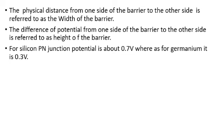The difference of potential from one side of the barrier to the other side is referred to as the Height of the Barrier. For Silicon, the PN junction potential is about 0.7 volts, whereas for Germanium it is 0.3 volts.